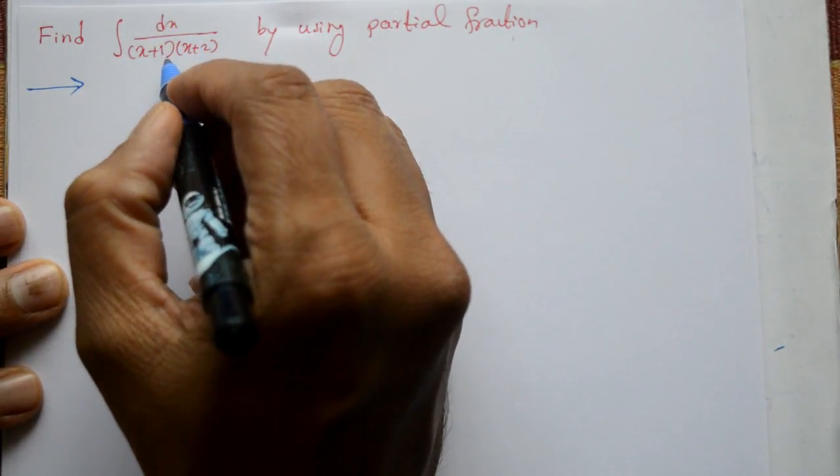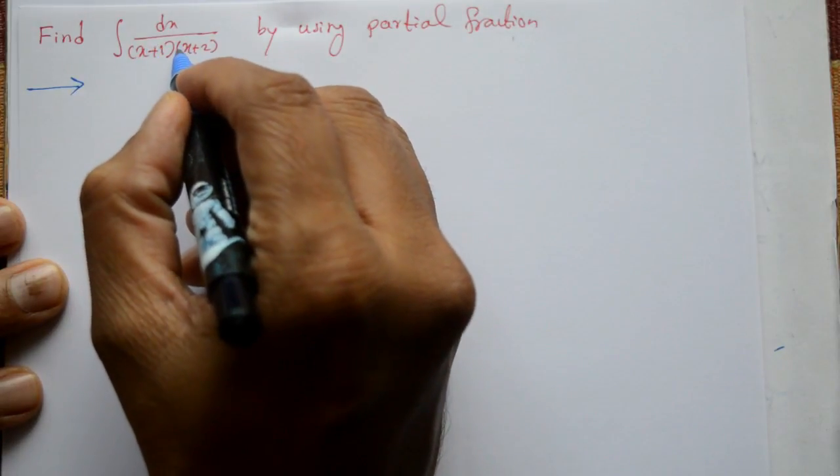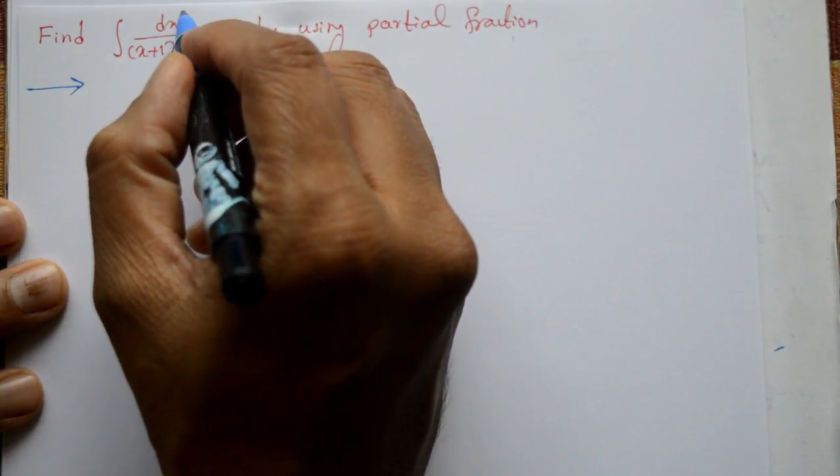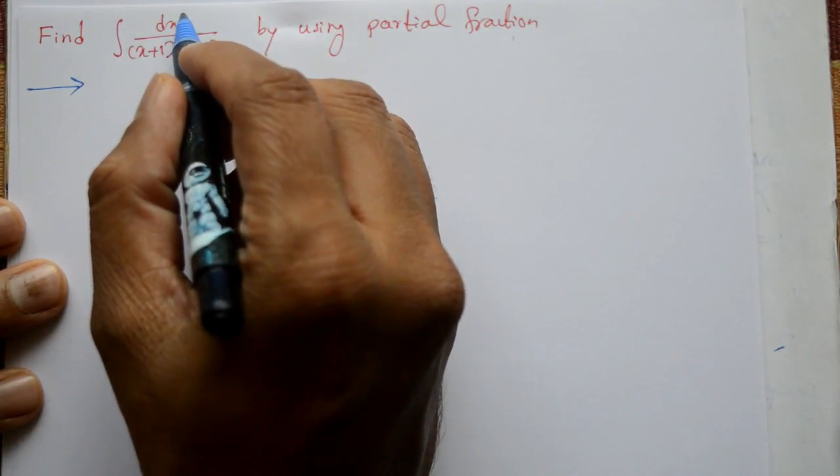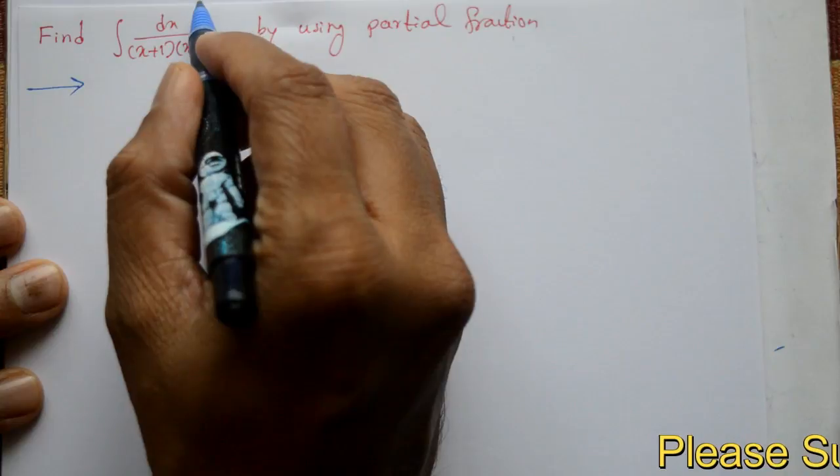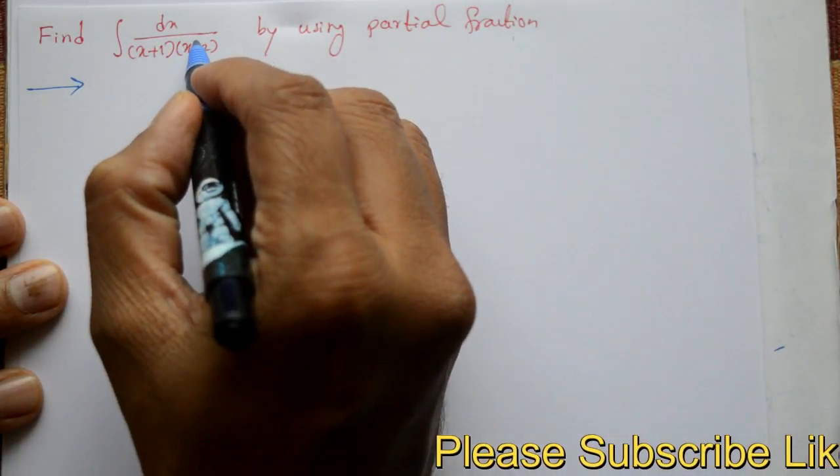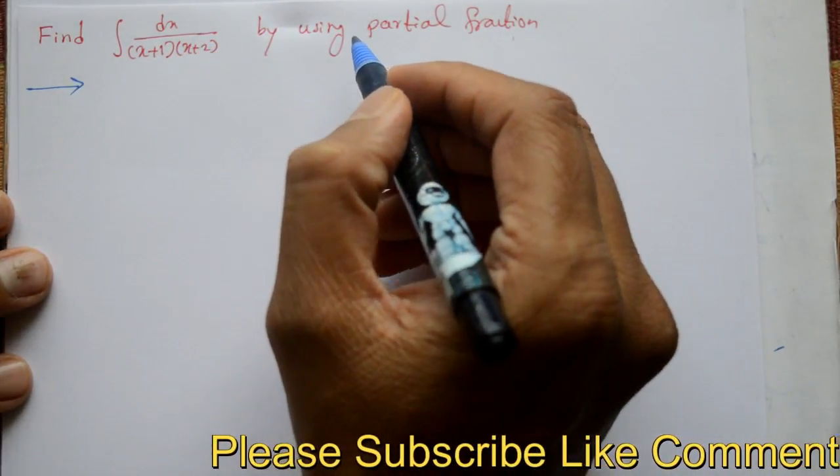A proper fraction ho gaya, because x ka degree 2 hai denominator part mein, either numerator is less than denominator degree. Either degree kya hai, x ka 0 hai, x as to 0 hai, 1 hota hai. Iska x square 2 hota hai, isle proper fraction hota hai.